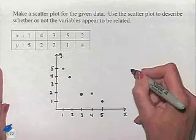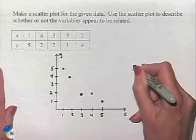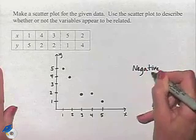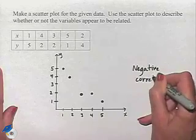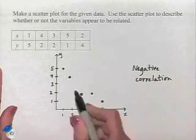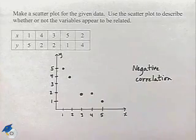It appears that what we have is called a negative correlation, which means that as the x value increases, the y value appears to decrease.